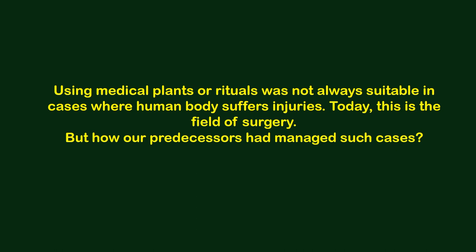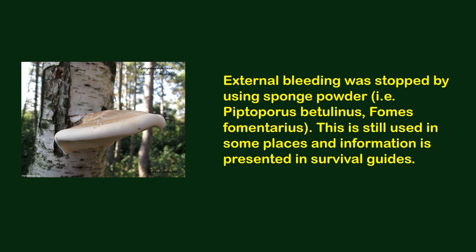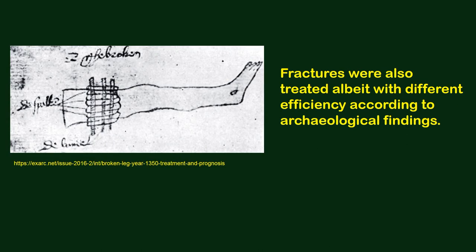Traditional practices in surgery and physiotherapy: using medicinal plants or rituals was not always suitable in cases where the human body suffered injuries. Today this is the field of surgery, but how did our predecessors manage such cases? Light post-traumatic lesions were treated with cold compresses. Massive post-traumatic lesions, for example after battles, were treated by wrapping the human body in fresh and cured animal skin. External bleeding was stopped by using sponge powder, for example from Piptoporus betulinus or forms for mentariums. There were also empirical approaches to treat dislocations of arms, legs, and backbone.